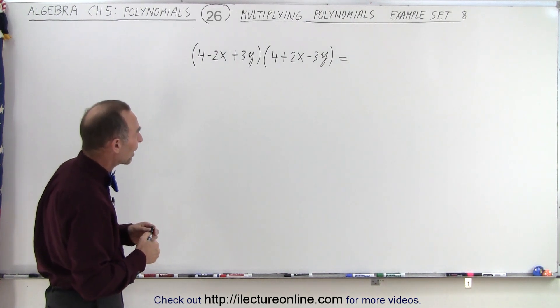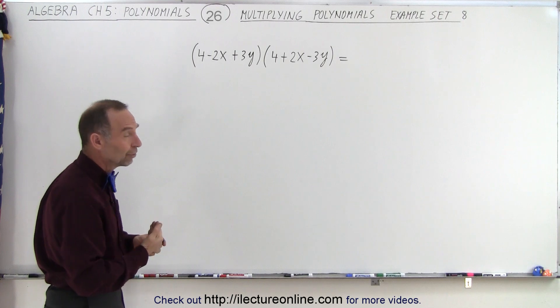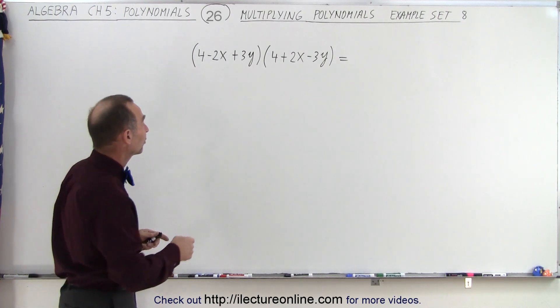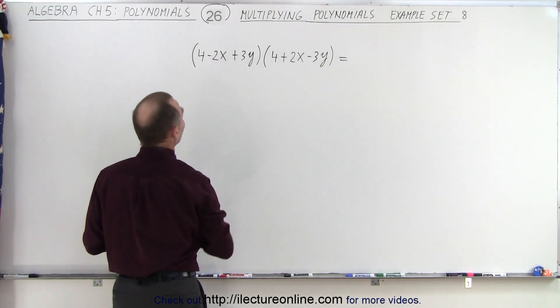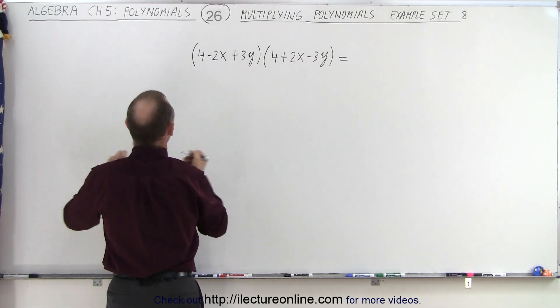However, if we're a little bit clever about it, we can rewrite this to make it a lot easier. For example, we can take a look at the last two terms and in this case factor out a negative sign. If we do that, we get the following.